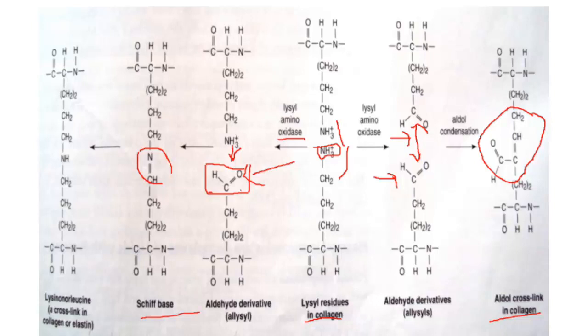The lateral association of triple helices forms fibers, and the stability between the triple helical structures is provided by these cross-linking arrangements. With this, today's discussion on the structure and synthesis of collagen is complete. The basics covered here will build our foundation for understanding the associated disease processes, which we will discuss in the next class.